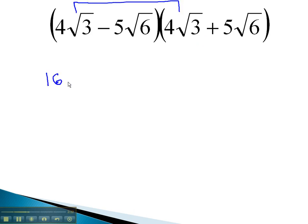4 times 4 is 16, and inside the radical, 3 times 3 is 9, and the last two terms. Negative 5 times 5 is negative 25, and √6 times √6 is √36.